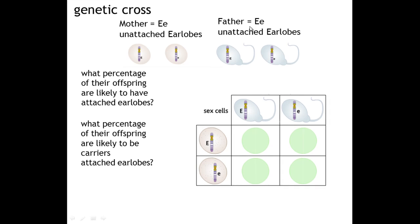The father's genotype is big E, small e. That means that in his sperm, he only carries one of these alleles. It is very important that gametes, or sex cells, only carry half the genetic information — they only carry one allele for, in this case, earlobe attachment. The father's sperm can either have the allele for unattached or the allele for attached.